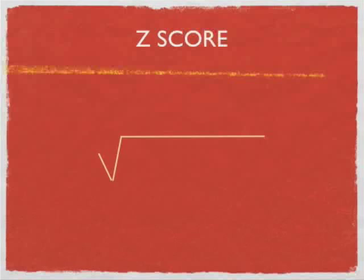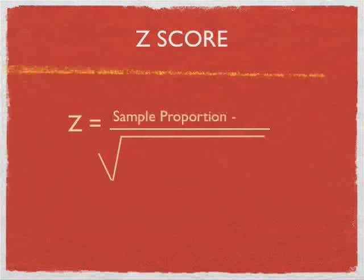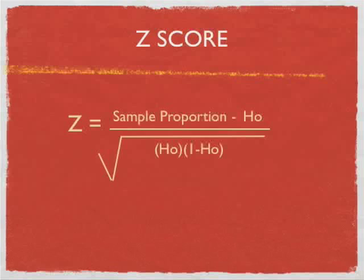The formula for calculating z-score for a proportion is z equals the sample proportion minus the null hypothesis divided by the square root of the null hypothesis times 1 minus the null hypothesis divided by the sample size.